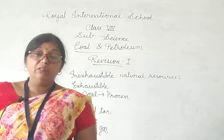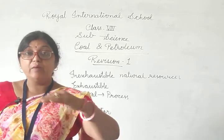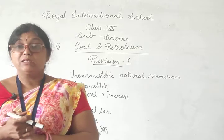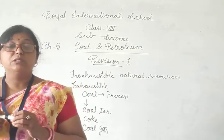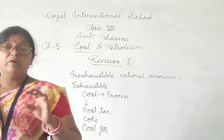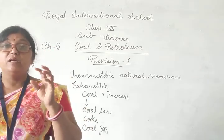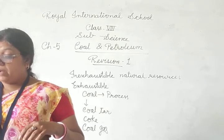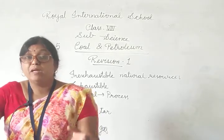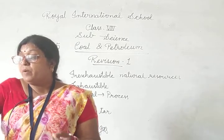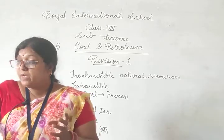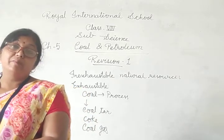Coal tar is called damar. It is a black, thick, oily liquid that is obtained from the destructive distillation of coal. It is a mixture of about 200 substances. It is used to make naphthalene balls which are a moth repellent — jis ko hum sardhi ke wakt ke andar humare woolen kapdon ke beech mein rakhte hai. It is also used in perfume, plastic, and photographic materials.